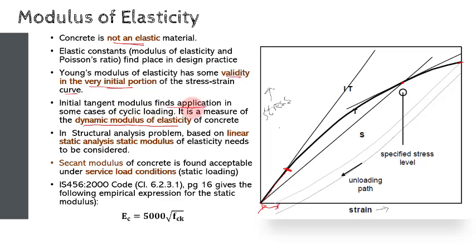In the usual problems of structural analysis based on linear static analysis, it is the static modulus of elasticity that needs to be considered. The secant modulus of concrete is generally found acceptable in representing an average value of modulus of elasticity under service load conditions—that is, static load. Refer to Clause 6.2.3.1, page 16, of IS 456:2000. Here you are going to get the empirical expression for the static modulus of elasticity: Ec = 5000√fck. Please note this is the static modulus of elasticity of concrete.